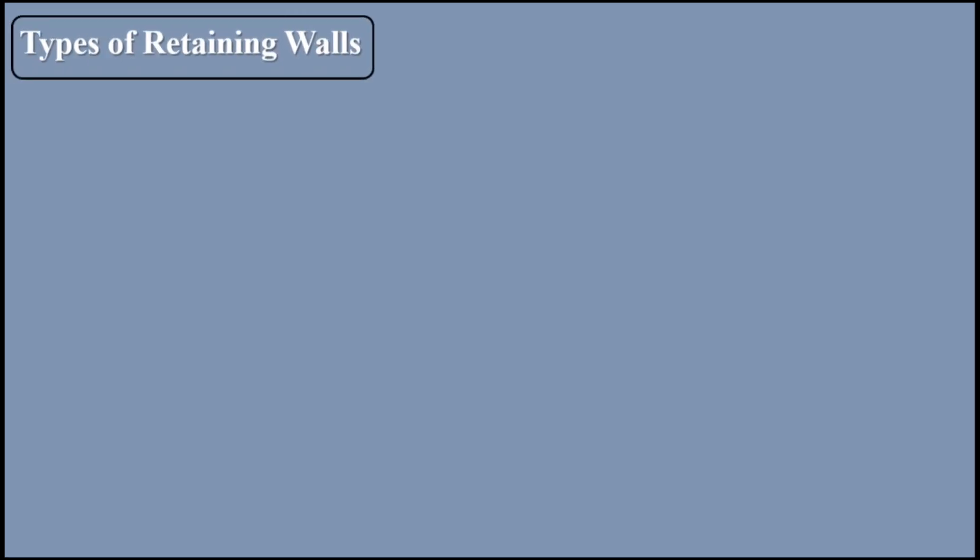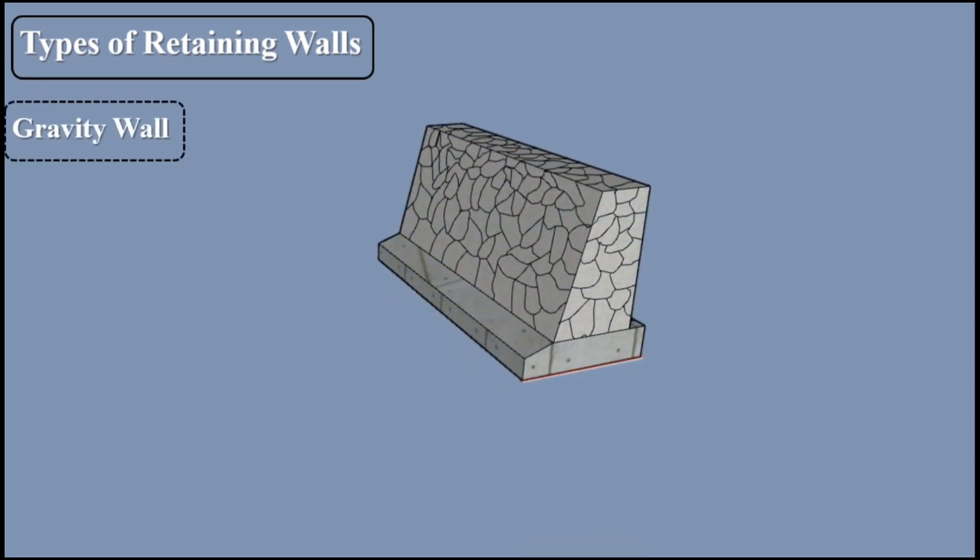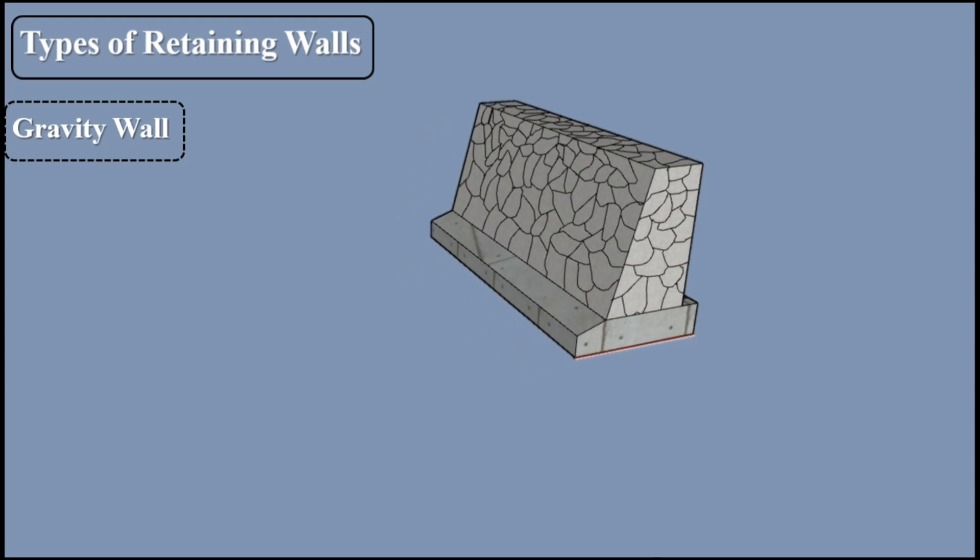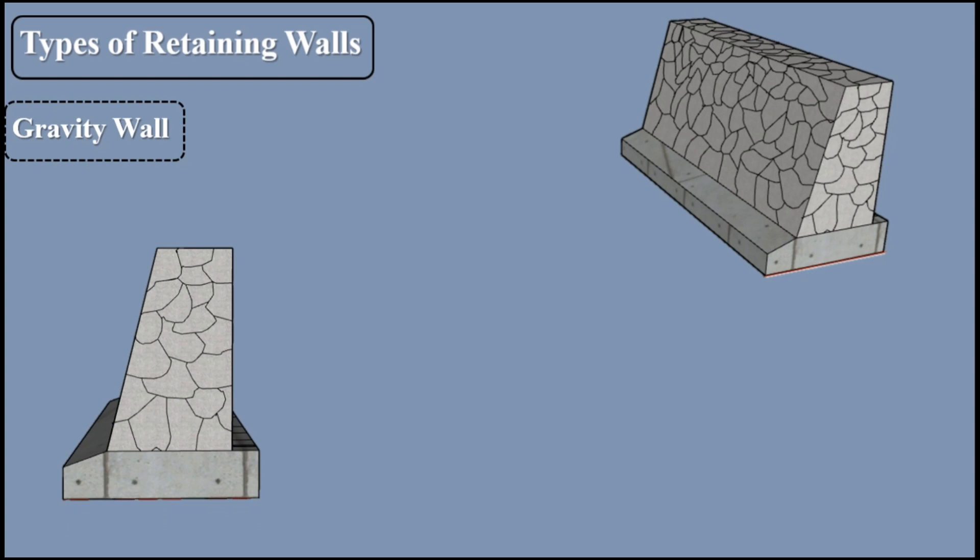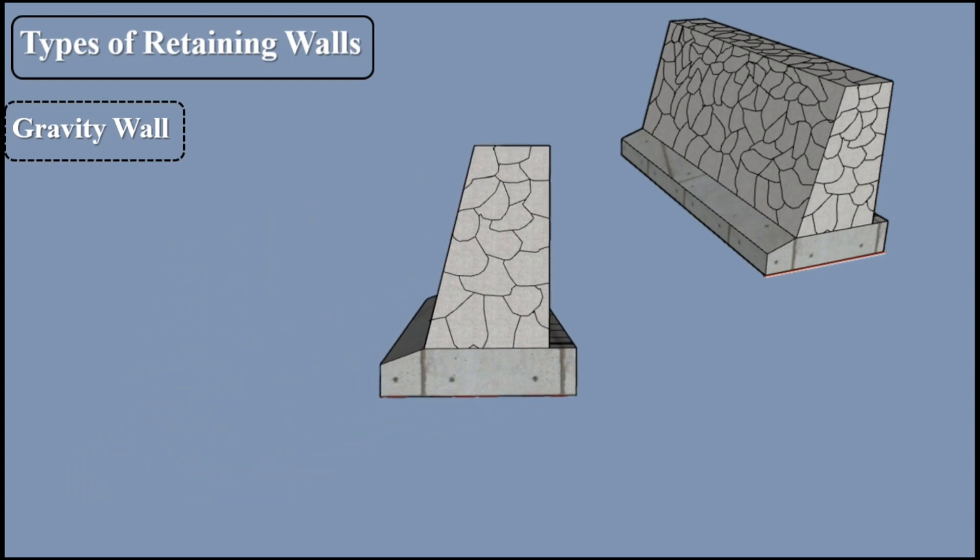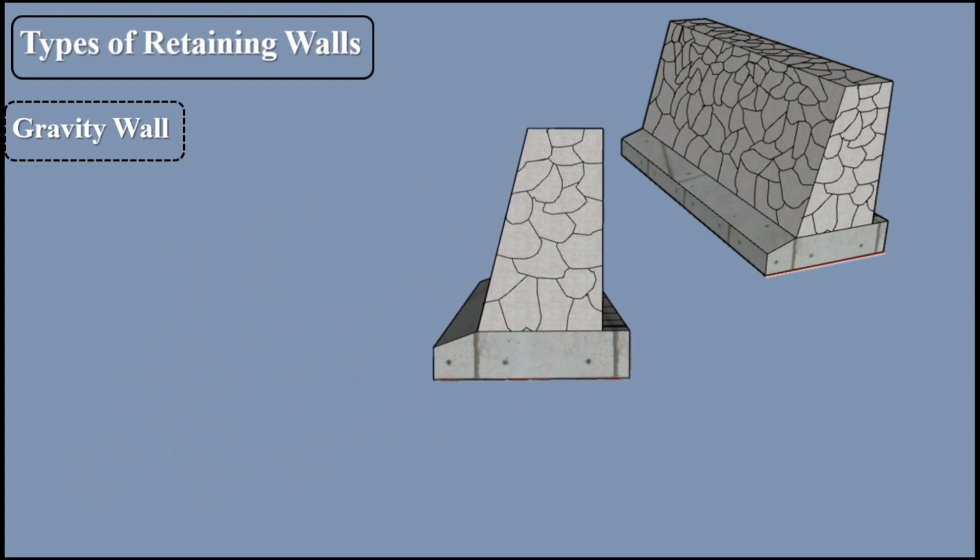Types of Retaining Walls: 1. Gravity Wall. The type of retaining wall depends on its use. Gravity walls are generally trapezoidal in shape, but may also be built with broken backs. The base and other dimensions should be such that the resultant falls within the middle one-third of the base.